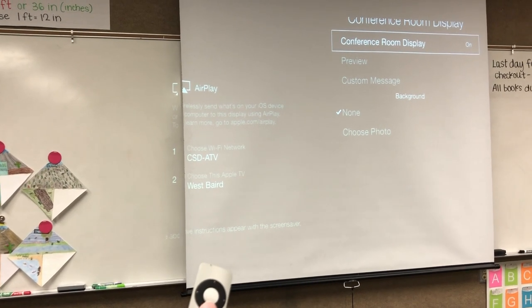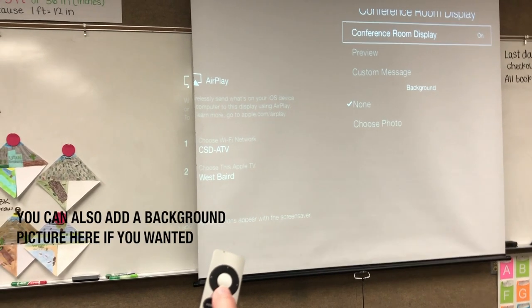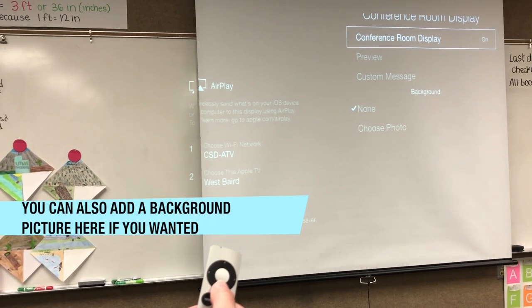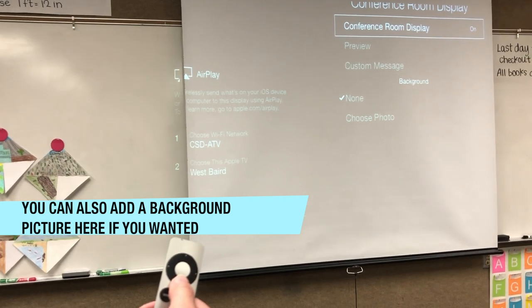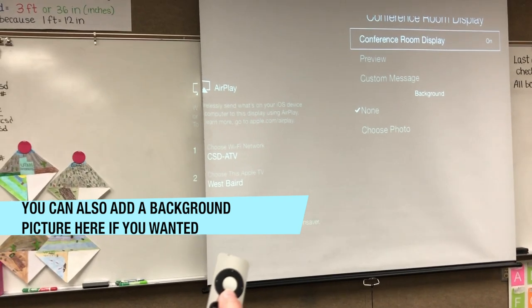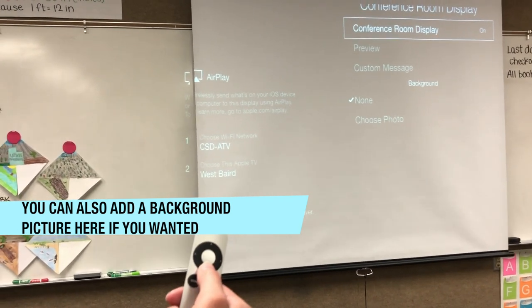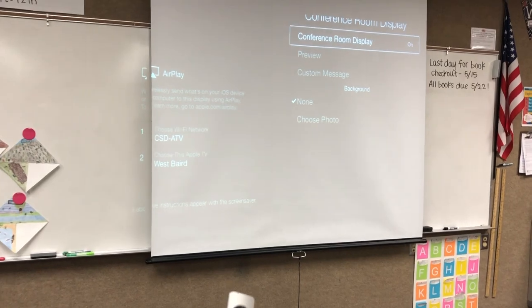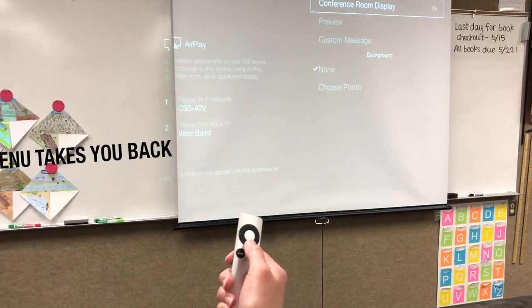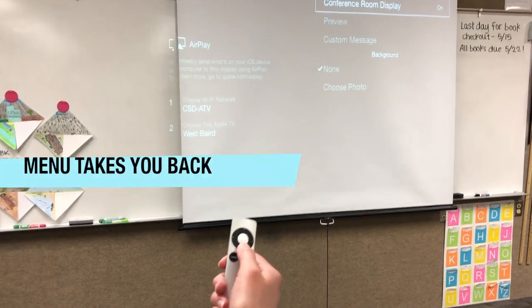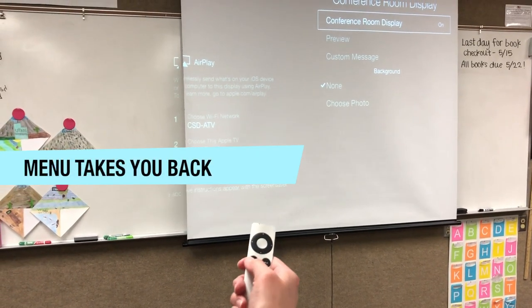Push the middle button to turn it on. Perfect. Now it should be on Conference Room Display. So now those movies shouldn't come up. Once you've turned Conference Room Display on, you need to go back by pushing menu.